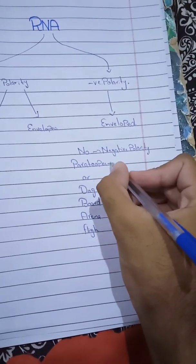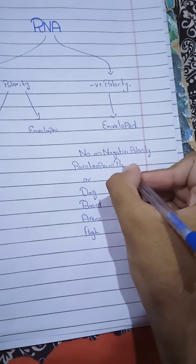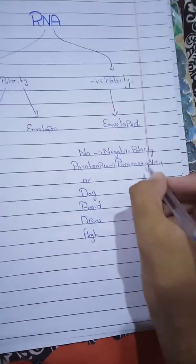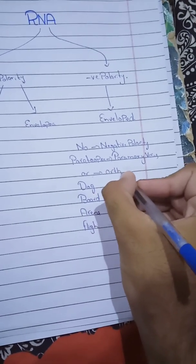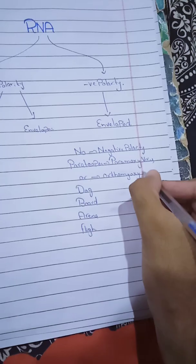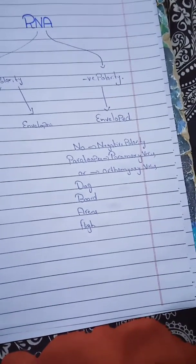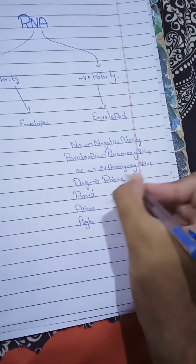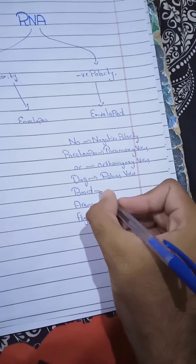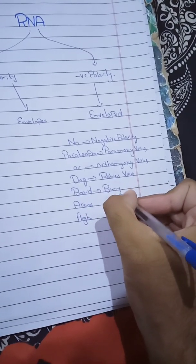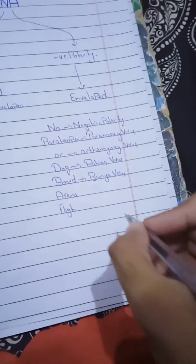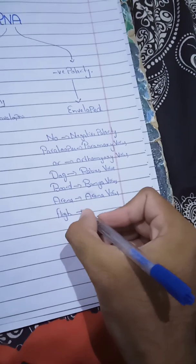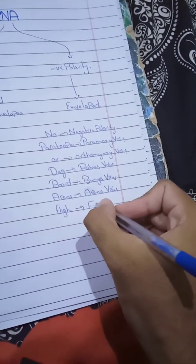From 'Para' you should know Paramyxovirus. From 'Or' — Orthomyxovirus. From 'Dog' — you know that rabies is caused by dogs, so this is the Rabies virus. From 'Board' — Bunyavirus. From 'Ariana' — Arenavirus. And from 'Flight' — Filovirus.